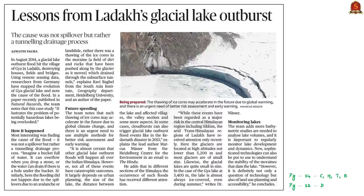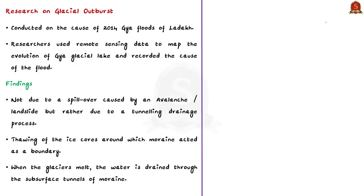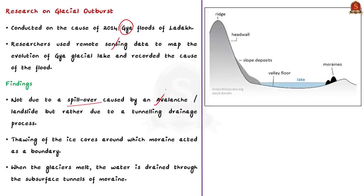Here we have one more article related to climate change — it talks about glacial lake outburst. Thawing of glaciers is one of the consequences of climate change. The author discusses research conducted on the cause of the 2014 Ladakh floods. Researchers from Germany used remote sensing data to map the evolution of the Gia glacier lake and found the real cause of the flood. The 2014 Ladakh floods were initially thought to be caused by spillover of a lake due to an avalanche or landslide — like a stone dropped into a bucket of water causing overflow. But research findings revealed the cause was not spillover, but rather a tunneling drainage process.